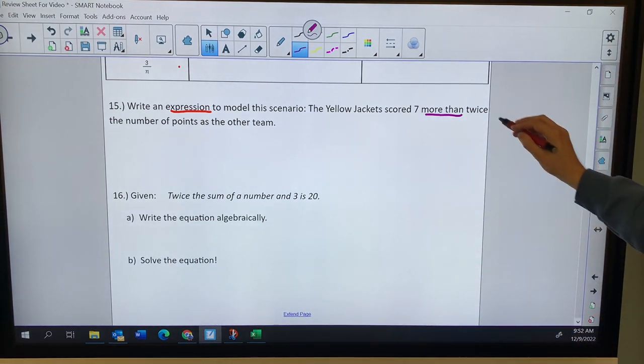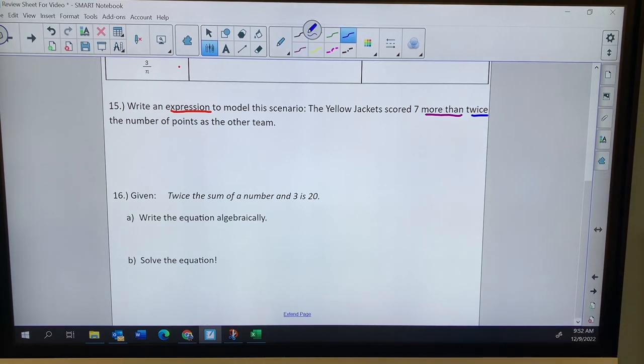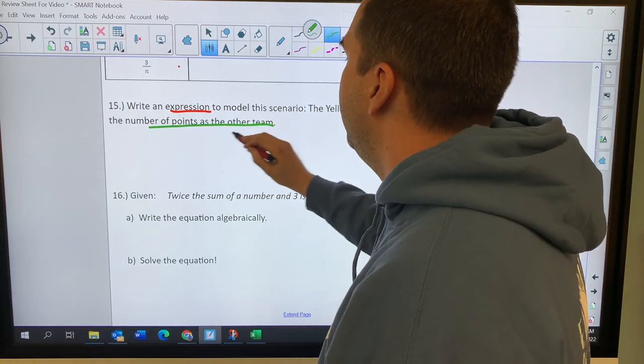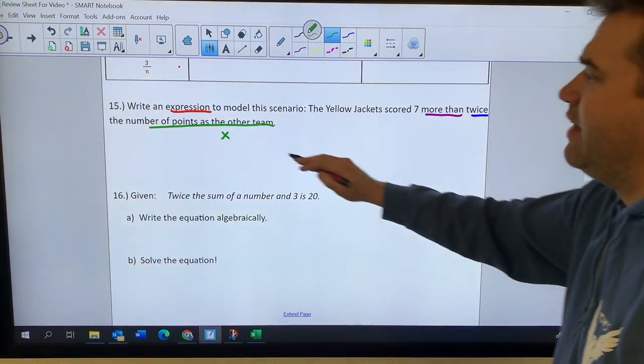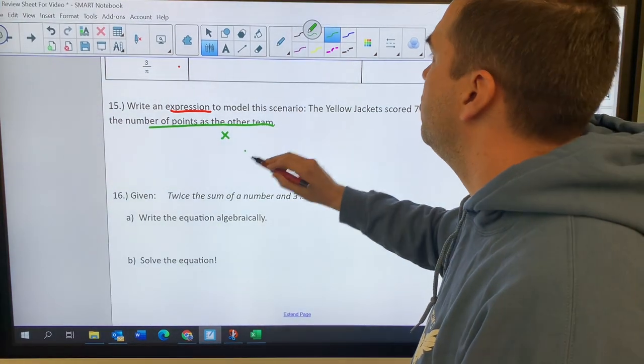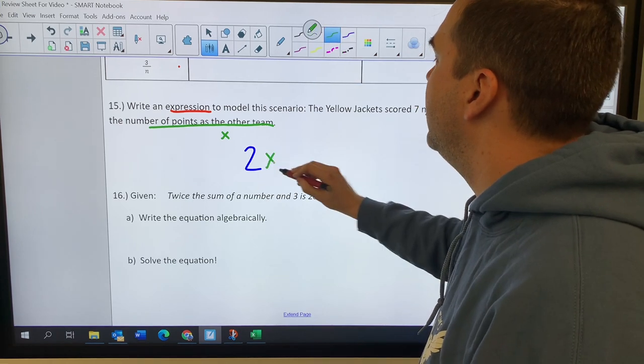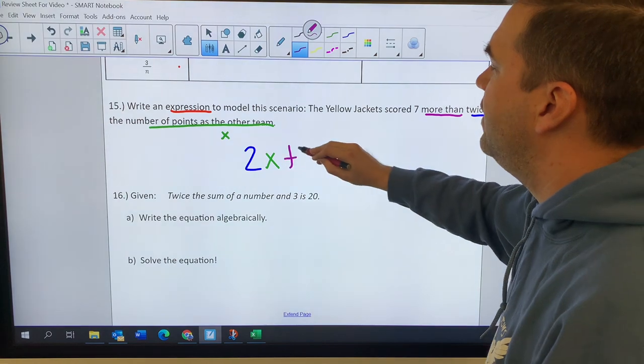Twice the number. Twice the number. That's telling me I need to multiply by two as the other team. So the number of points that the other team scored, that's going to be my X. So I'm going to take that number X and multiply it by two. We've got two times X and seven more than means I need to add seven.